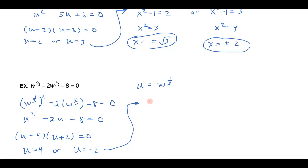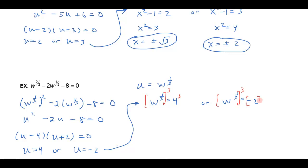u was w to the one-third, so w to the one-third is equal to 4, or w to the one-third is equal to negative 2. Now, how do I solve this? Well, the one-third power is the cube root, so to undo a cube root, I'm going to cube both sides. Cubing the left side multiplies the exponents: one-third times three gives me one, so I get w to the first power. This gives me w equals 64, and over here I get w equals negative 8. Negative two to the third power is negative eight. So those are my solutions.